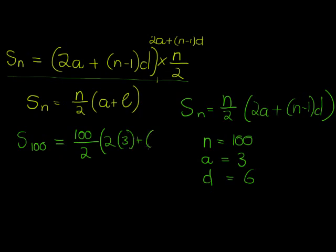Let's see what we get: 50 times 2×3, which is 6, plus 100×6 is 594.